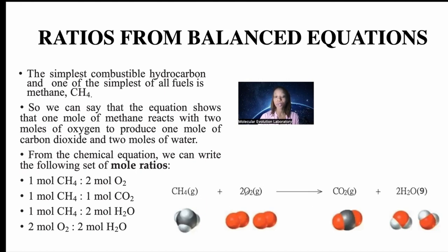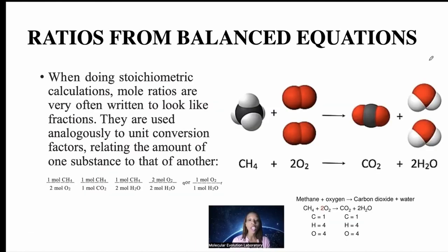So one methane molecule plus two oxygen molecules gives you one carbon dioxide molecule (gas) and two water molecules (gas). When doing stoichiometric calculations, mole ratios are often written as fractions and used analogously to unit conversion factors relating the amount of one substance to that of another. For methane combustion: 1 CH4 to 2 O2; 1 CH4 to 1 CO2; 1 CH4 to 2 H2O; 2 O2 to 2 H2O.